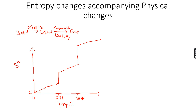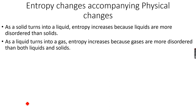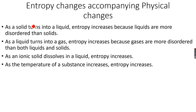We know the rule. And then again, when it has become a gas and we continue heating the gas beyond 373 Kelvin, entropy keeps increasing because the gas particles gain energy and they become more disordered. To summarize all of this: as a solid turns into a liquid, entropy increases because liquids are more disordered than solids. As a liquid turns into a gas, entropy increases because gases are more disordered than both liquids and solids. As an ionic solid dissolves in a liquid, entropy increases.